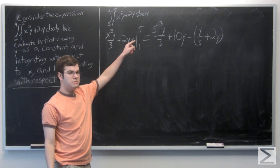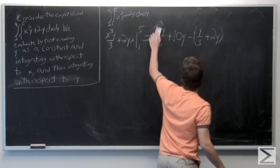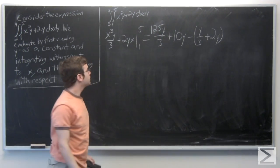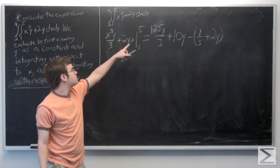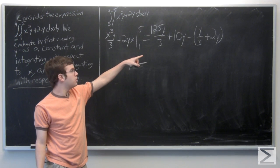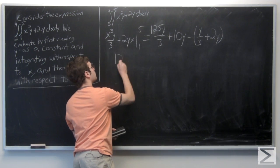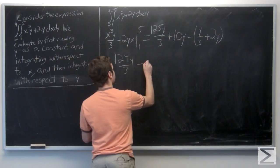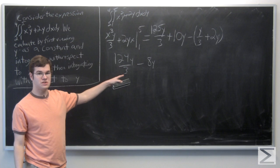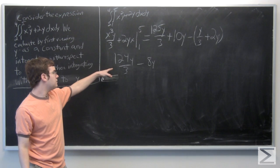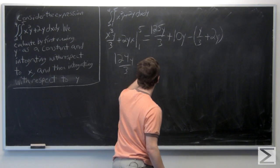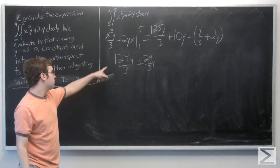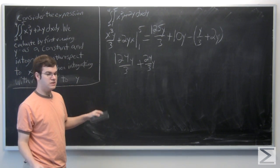So 5 to the third is the same as saying 125, 5 times 5 times 5. So now when finding this, we say that 125 minus 1 is 124 over 3, and 10y minus 2y is 8y. 8 is just another way of saying 24 over 3, so now we'll have common denominators between these two. So 124 plus 24 is equal to 148.